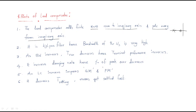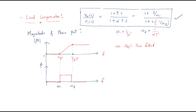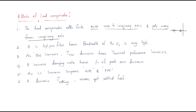It is a high-pass filter, hence the bandwidth of the system is very high — it gives more gain to high frequencies. If you find out the bandwidth, the upper cutoff frequency is very high, so bandwidth is very high. As bandwidth increases, the rise time decreases, because bandwidth is proportional to frequency and frequency is inversely proportional to time. When rise time decreases, the system reaches steady state faster, so the transient response is improved.